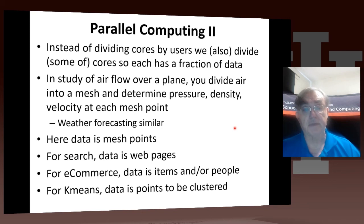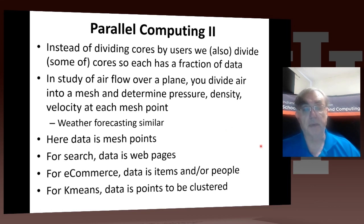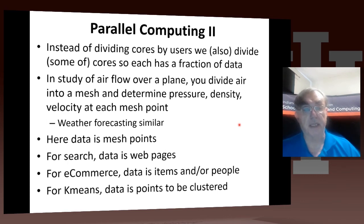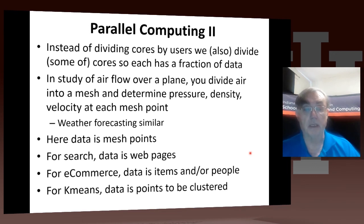This all started largely with scientific computing — that was where parallel computing first began — with things like weather forecasting, studying air and moisture, or airflow over a plane. You divide the air into a mesh and determine the pressure, density, and velocity of each mesh point. That's a basic approach to solving differential equations, where the data is the mesh points — not the rankings of a recommender system or internet data fragments, but a set of mesh points characterized by properties like pressure, density, and velocity.